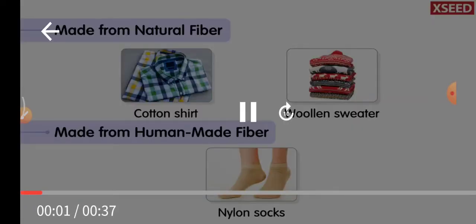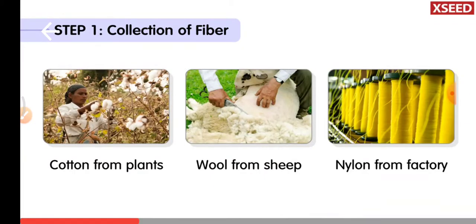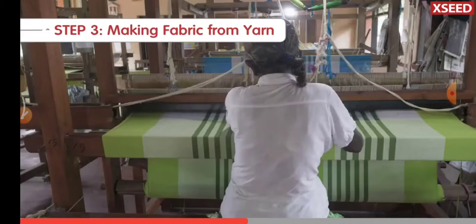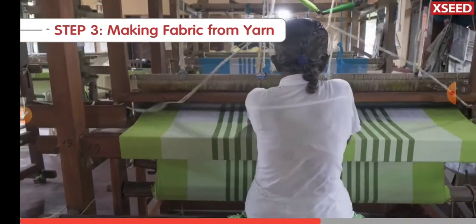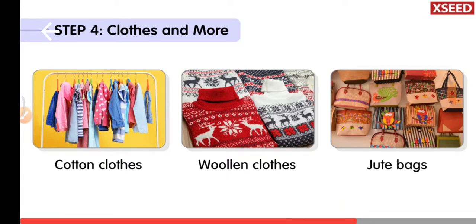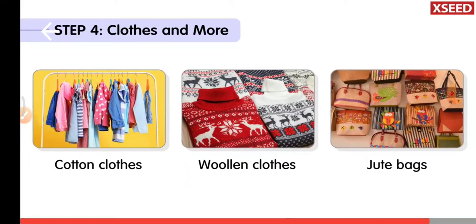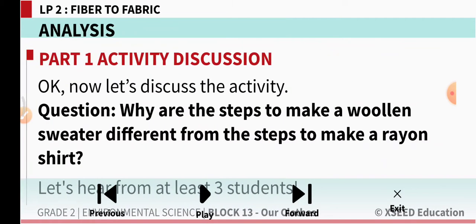We make clothes from natural or human-made fibers. First, the fiber is collected from plants, animals, or factories. Then these fibers are twisted to make yarns. The yarns are then woven or knitted to make cloth or fabric. The cloth is then cut and stitched to make t-shirts, shorts, sweaters, and other things.